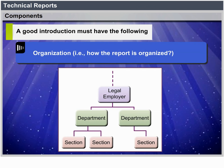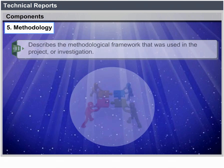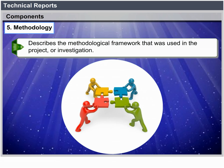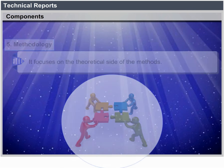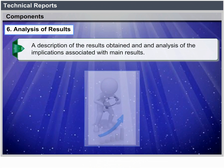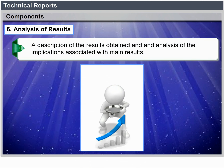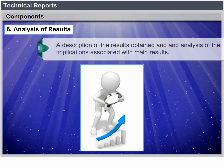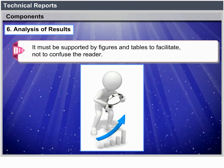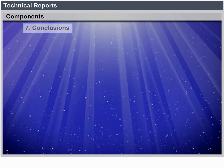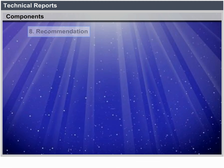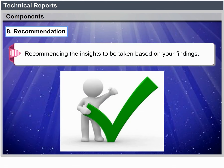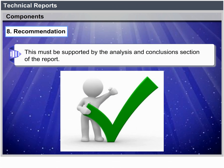Methodology: Describes the methodological framework used in the project or investigation, focusing on the theoretical side of the methods. Analysis of Results: A description of the results obtained and analysis of implications associated with the main results — it must be supported by figures and tables to facilitate, not confuse, the reader. Conclusions: A summary of the major findings arrived at in the previous sections — conclusions is not an analysis section. Recommendation: Insights into the next steps you recommend to be taken, supported by the analysis and conclusions sections.